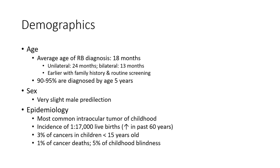Age: the average age of diagnosis for retinoblastoma is around 7 months. Unilateral cases present at around 24 months, bilateral cases at around 13 months — earlier when there is a family history and routine screening is performed.